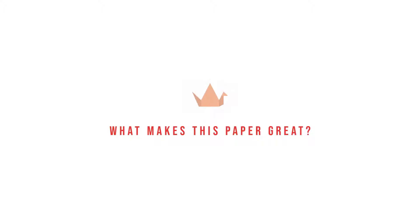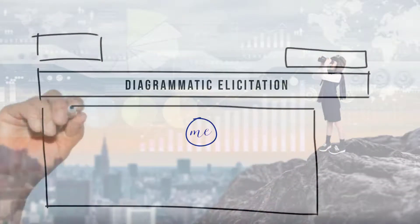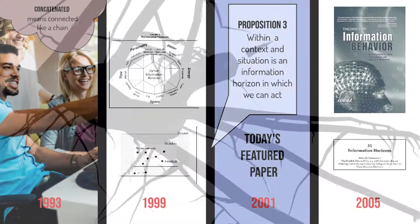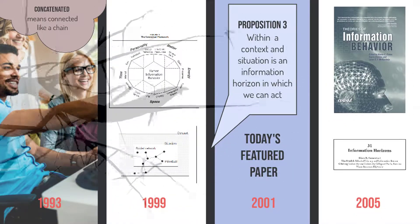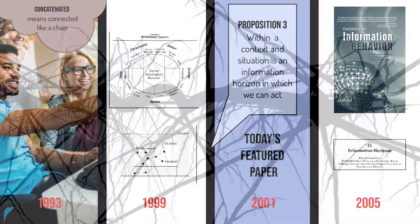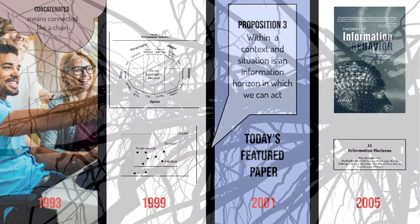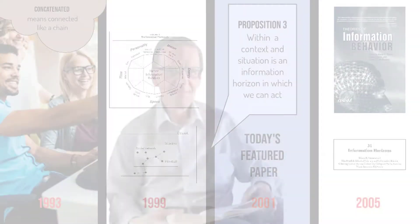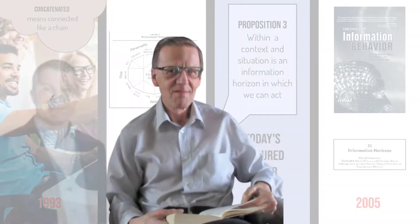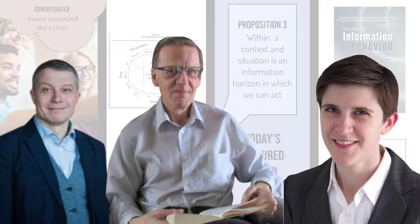So, what makes this paper great? Adapting diagrammatic elicitation to information behavior research is a great methodological innovation and contribution. It's also great that this idea has such deep and authentic roots — it emerged from Sonnenwald's original dissertation research and is situated within a well-elaborated theoretical framework of information behavior. Another mark of greatness is that information behavior scholars have been inspired to take up and adapt the information horizon approach to their own purposes.